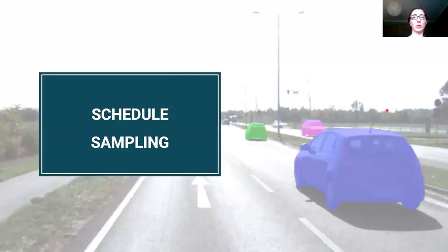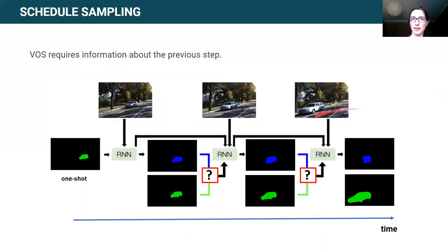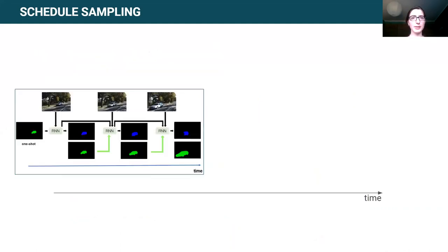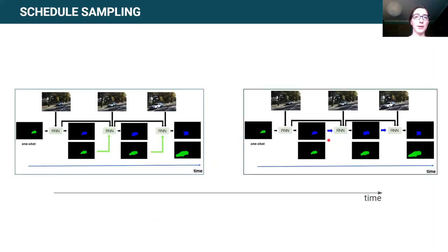The first curriculum studied is schedule sampling. Schedule sampling is a technique that benefits from training using the ground truth annotations as the input for the next step, but at the same time avoids the discrepancy that we would obtain between training and inference if we were to use only these ground truth annotations. This discrepancy is avoided by gradually changing the use of the ground truth annotations to the use of the model's predictions.